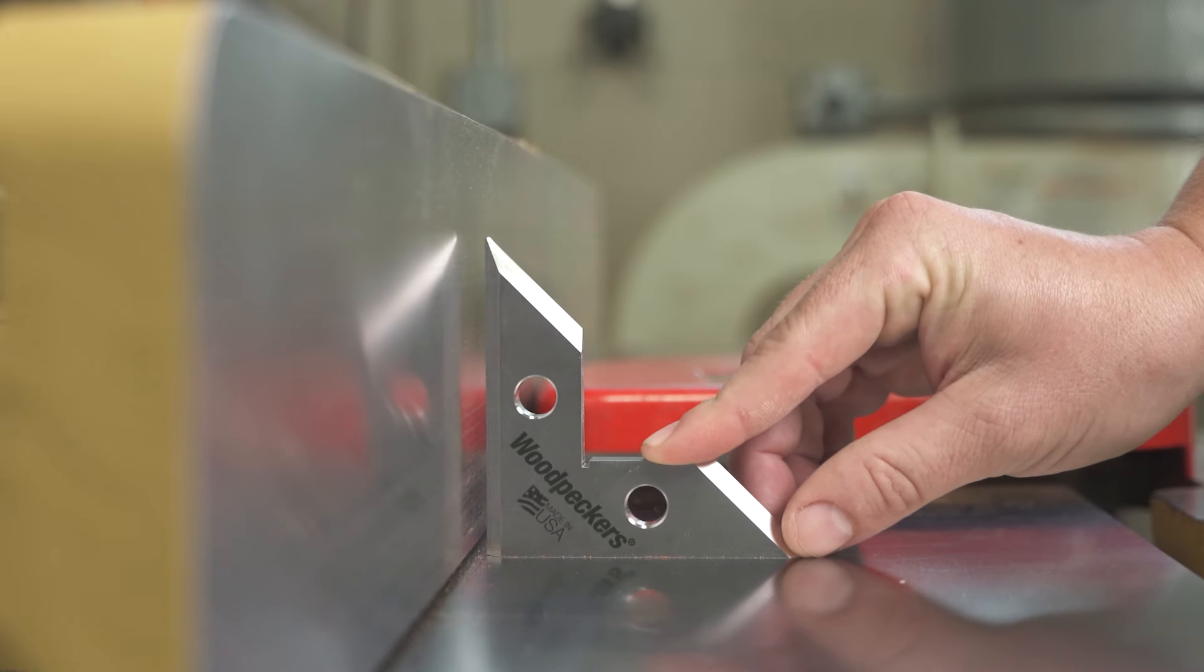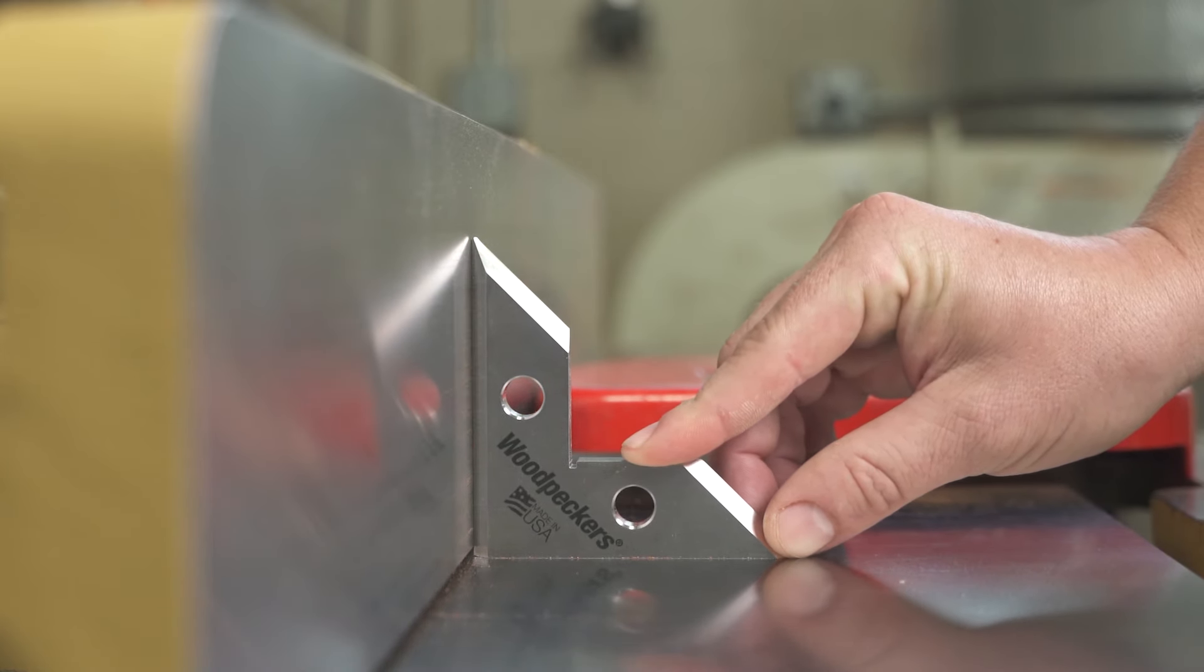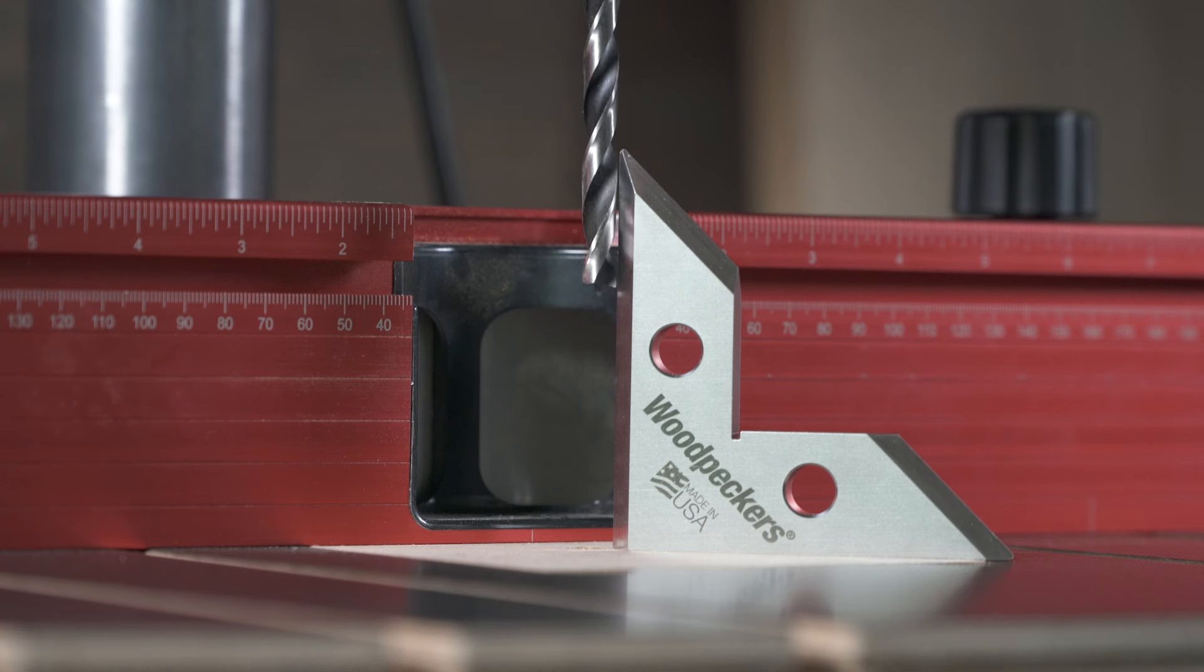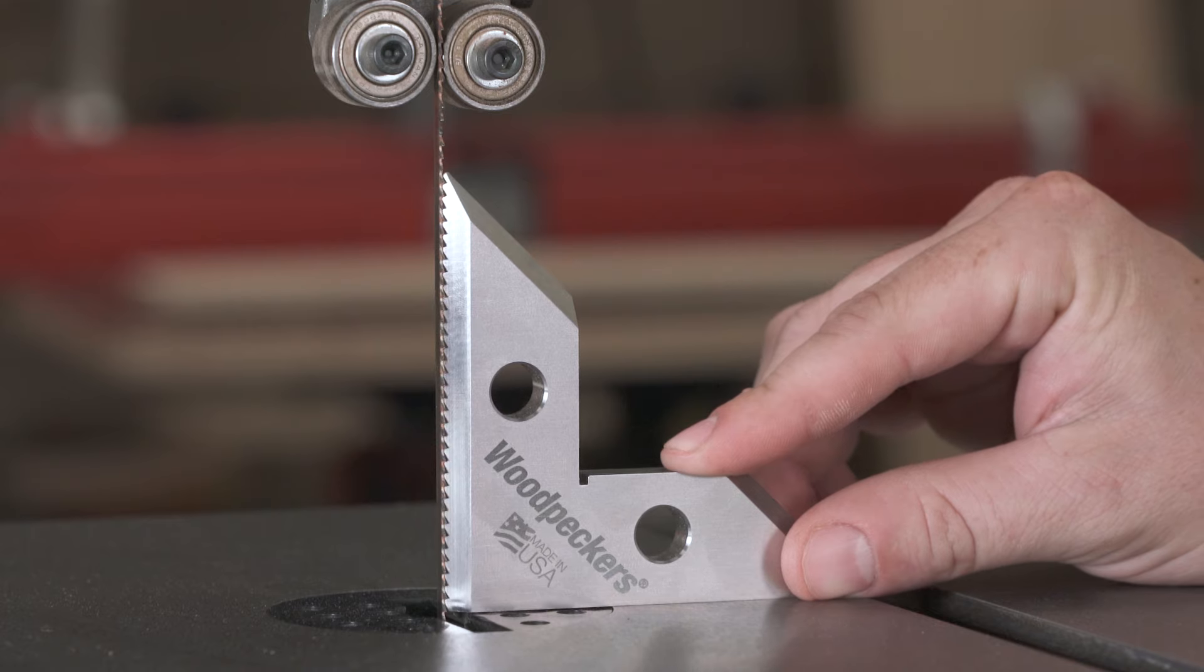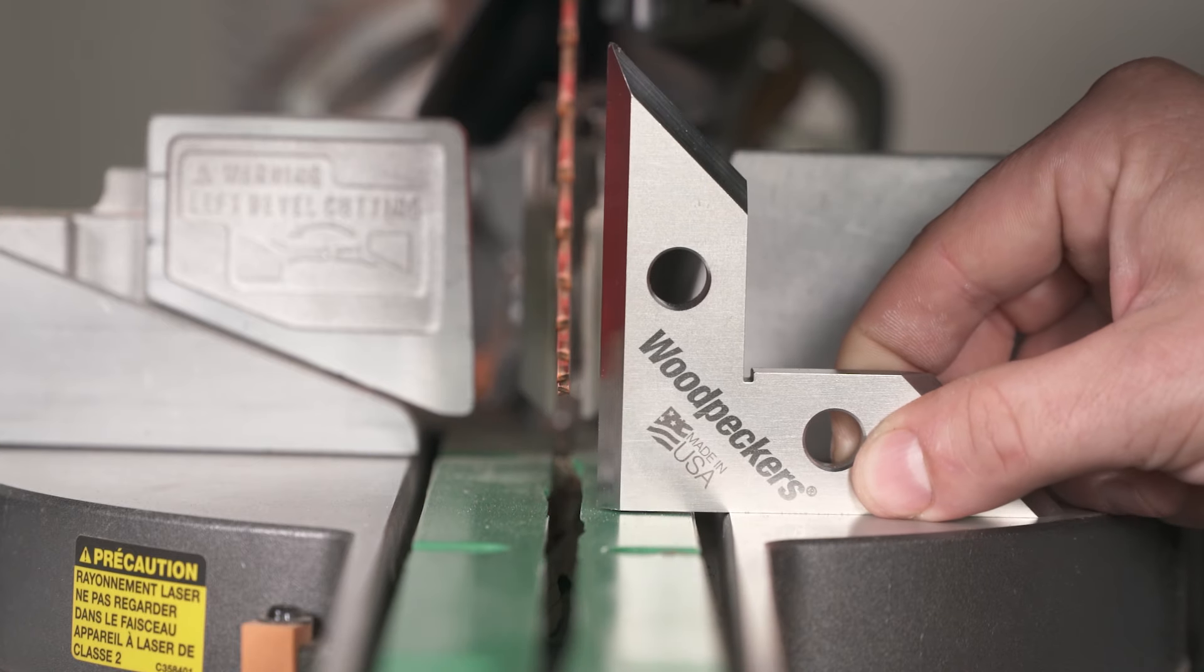The deadnut square is perfect for setting your joiner fence. It can be used at the drill press, the band saw, and at your miter station.